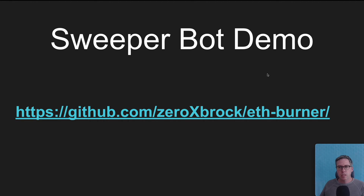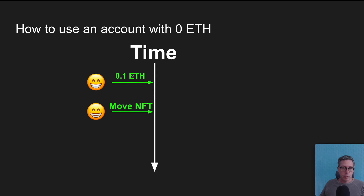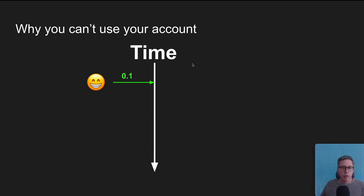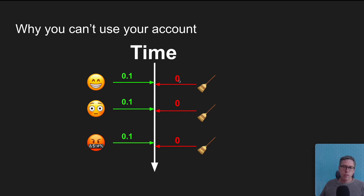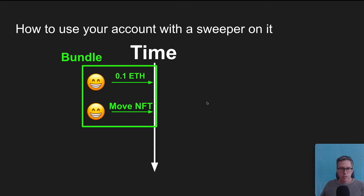What can we do to defeat a sweeper bot and rescue assets locked in a compromised private key account? Consider what it's like interacting with any account that has zero ETH: you first transfer in a small amount of ETH to pay for gas, then run a transaction sometime later to perform the action you want. However, because you have a sweeper, whenever you transfer in 0.1 ETH it is immediately zeroed out. What we need to do is take the funding transaction and the transaction we want to execute and put them together in a bundle — landing on the blockchain at the exact same time with no blocks in between.